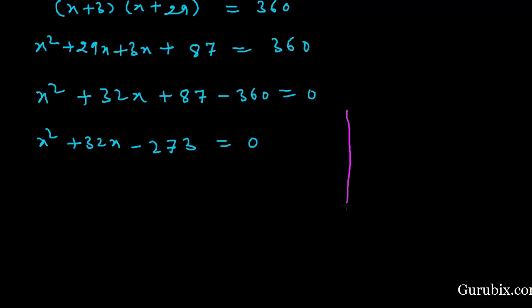For that, first we shall multiply the first term and the constant term. First term is X square and constant term is minus 273. This means we have minus 273 X square. Now we shall factorize this 273 by using prime factorization method.